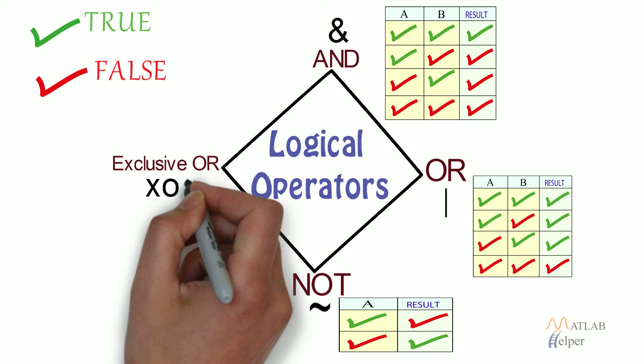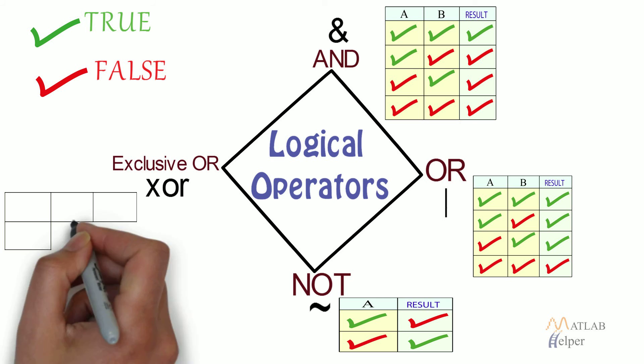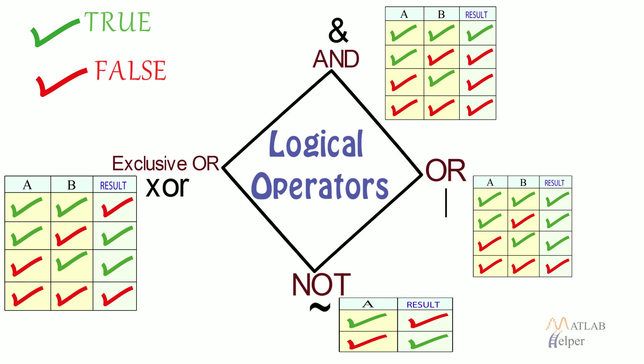Exclusive or: The result of A XOR B is true when any one of A or B is true, else false.